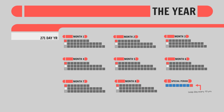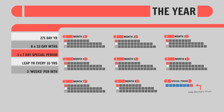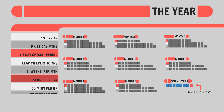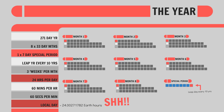So yeah: 271 local days in a year, 8 33-day months plus a 7-day special period, a leap year every 10 years, 3 asymmetrical weeks of 8, 12, and 13 days, 24 hours, 60 minutes, 60 seconds, and one little secret.